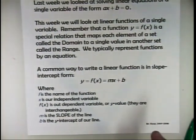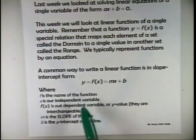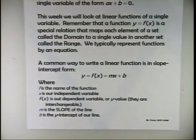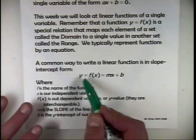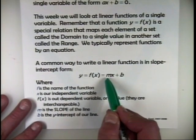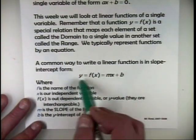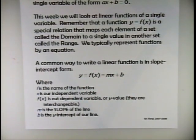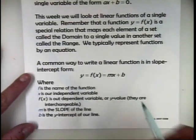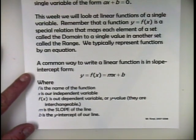No more than one value in another set called the range — that's our y values or our function values. We typically represent functions by an equation. A common way to write a linear function is in the slope-intercept form, something that you're probably very familiar with from Algebra 1. Here's slope-intercept form: y, which I'm now going to be using exclusively as f of x, is m times x plus b. This is a literal equation, but when we look at equations, we're going to have specific values plugged in for m and b — they have very specific meaning.